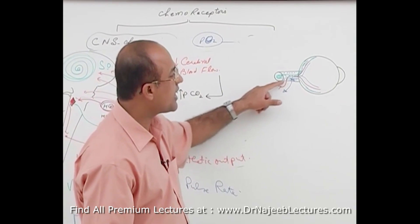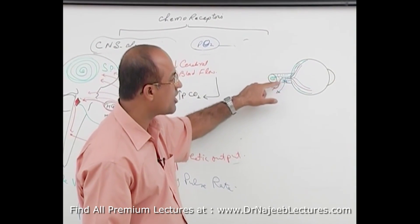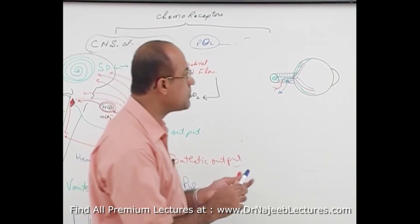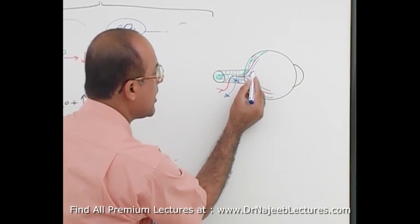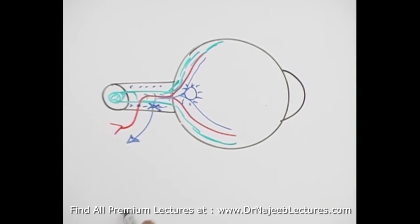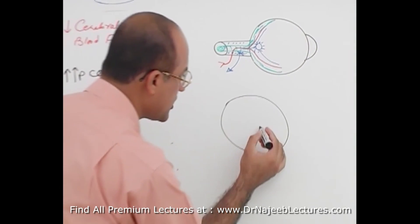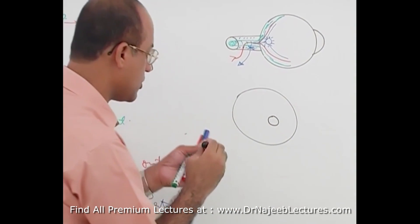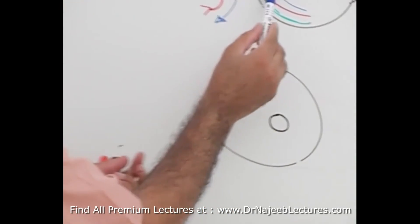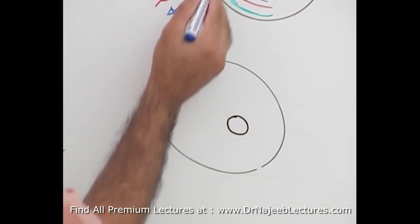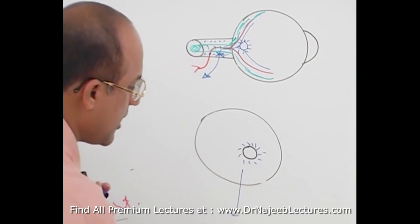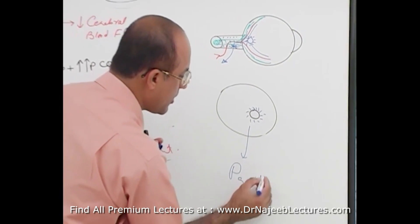So the retinal artery keeps on supplying the retina, but the retinal vein cannot drain the retina. Edema develops in the retina, and this edema is maximum around the optic disc. The margins of the optic disc will be blurred — where normally the margins of the optic disc are really sharp, in this person where edema is developing around the optic disc because venous drainage is impaired, the margins will become blurred. This condition is called papilledema.